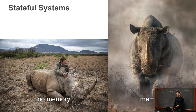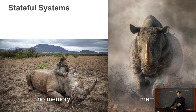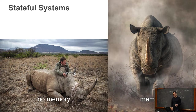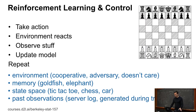Then there are stateful systems. If I have a stateful system — like this rhino — then depending on what I do to it, it may be happy or less happy about me, and I may or may not survive. On the other hand, if I remove the memory from that stateful system — if I tranquilize that rhino — I can poke it and do whatever, and it will not be upset at me in the next moment. So what it really means is reinforcement learning and control: I take an action, the environment reacts and I observe stuff, I update my model.